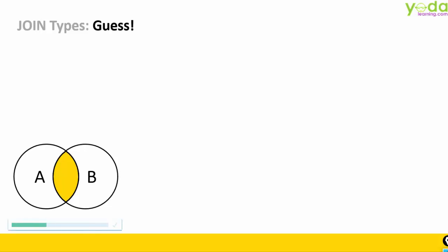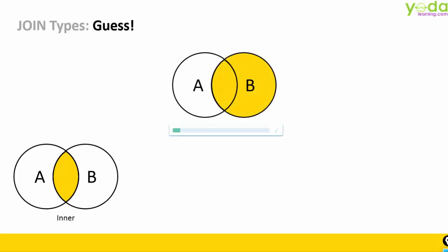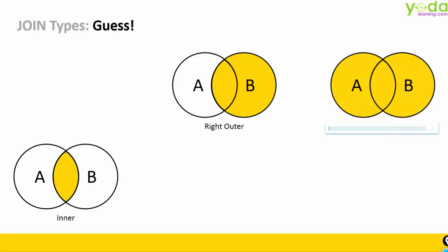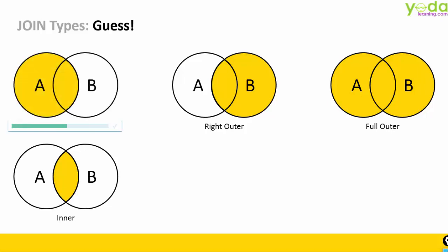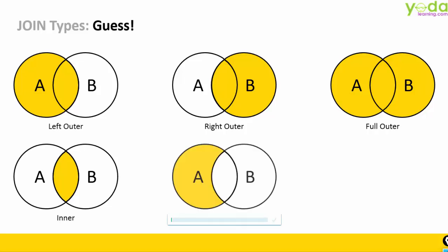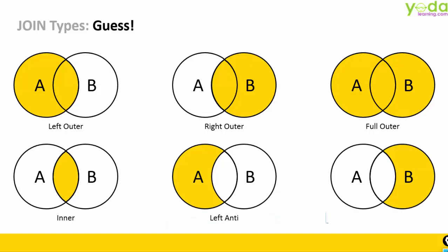Let me allow you to guess by looking at the two circles what join type it would be. This is Inner Join. Correct — Right Outer. This is Full Outer. This is the most popular of all the joins — Left Outer Join. Left Anti. Right Anti.